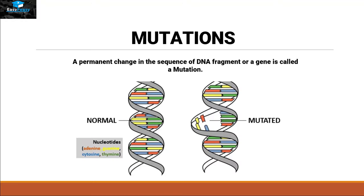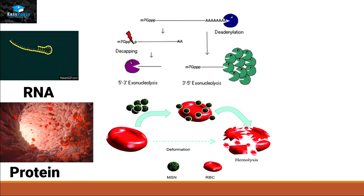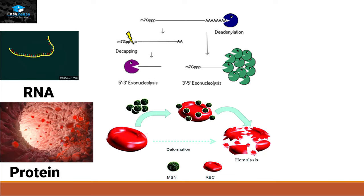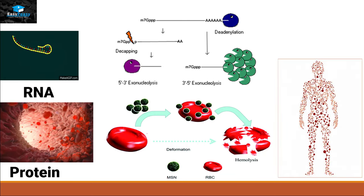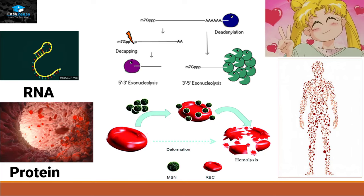Mutation can be defined as a permanent change in the sequence of a DNA fragment or a gene. This mutation is also present in RNA during the process of transcription and it can be present in protein during the process of translation, but RNA and protein are present in our body for a certain period of time, after which they get degraded by different enzymes and exonucleases. So our body will suffer that disease for a certain period of time, but after that we will recover.